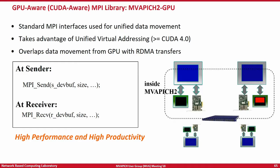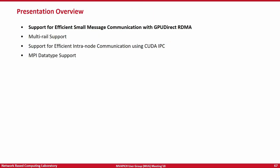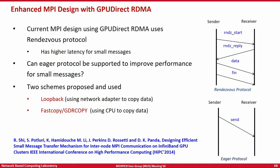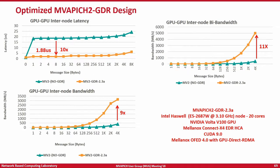Going forward, MVAPICH2-GDR has support for efficient small message communication with GPU direct RDMA and uses all of these different options. This is the kind of device-to-device performance you get — pretty close to host-to-host communication performance. Regarding availability: yes, this is available — go to the MVAPICH2 download page, download MVAPICH2-GDR as an RPM, install it, and you should get this performance, provided your system is configured correctly.